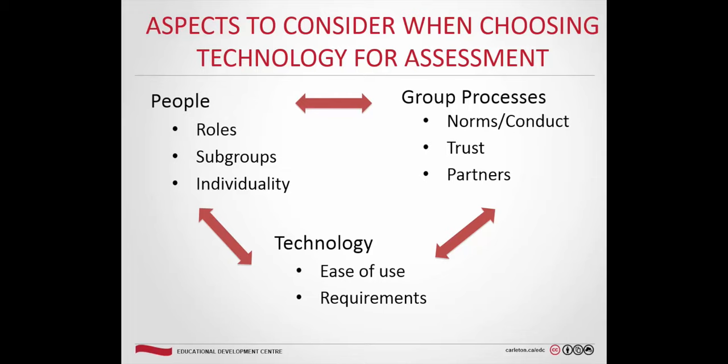Moving to the tech-choice discussion: things to consider when choosing assessment technology. Think about who's going to be assessed — their roles, whether they're undergrad, master's, or higher level — and any subgroups needing accessibility accommodations. Consider ease of use: if the technology creates a barrier, it takes away from what you're trying to accomplish rather than contributing. Also think about what your student group normally does — don't introduce something too advanced abruptly. Slow progression is better than jumping in.